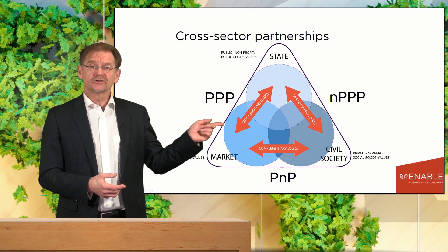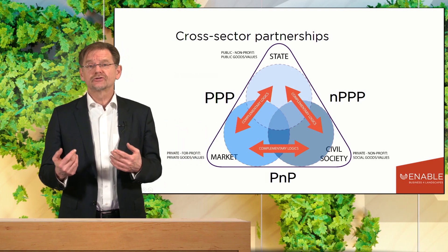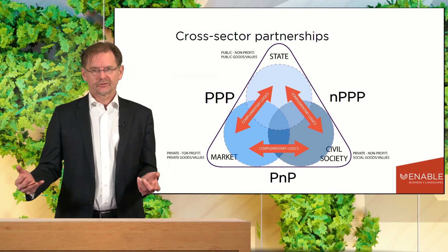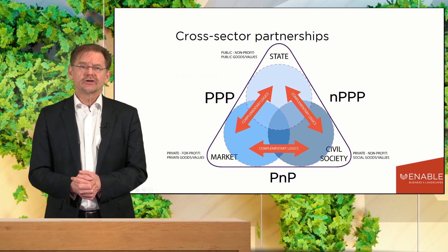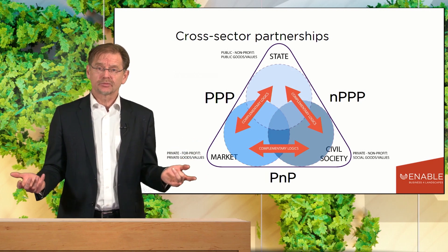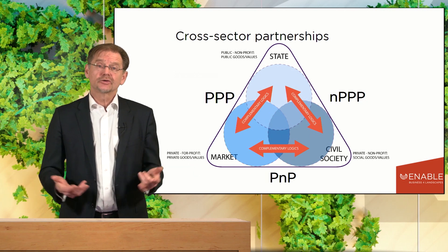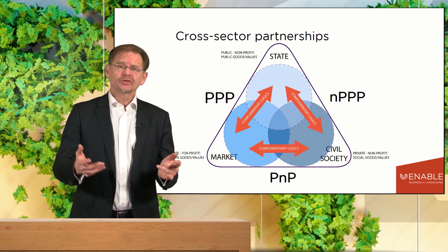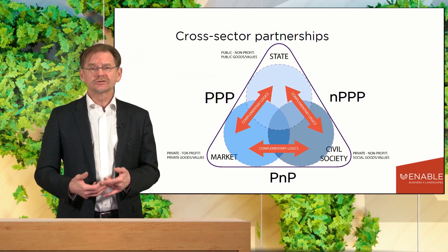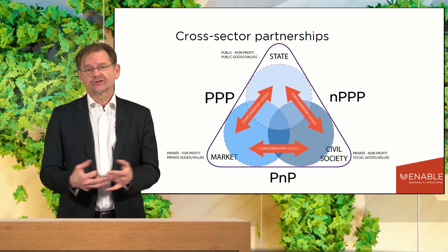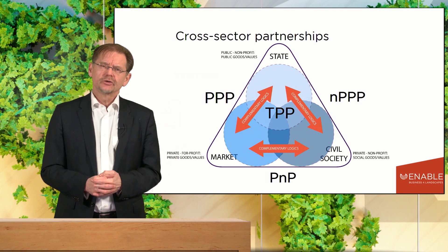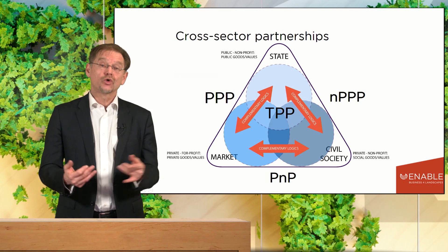When private companies partner with civil society organizations, we use the term PNPs — profit-non-profit partnerships. This happens, for instance, when an organization like the World Wide Fund partners with Unilever to enhance sustainable palm oil. Up until now, we have only been talking about bilateral partnerships, with two sectors involved. When all three sectors are involved in a partnership, we refer to that as a tripartite partnership, or TPP.